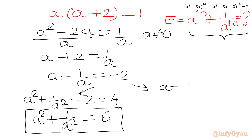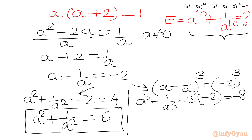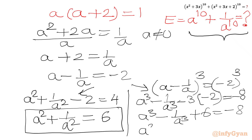Now we will cube both sides of a - 1/a = -2. Expanding: a³ - 1/a³ - 3·(a·1/a)·(a - 1/a) = -8, so a³ - 1/a³ - 3(-2) = -8, giving a³ - 1/a³ + 6 = -8. Therefore a³ - 1/a³ = -14.